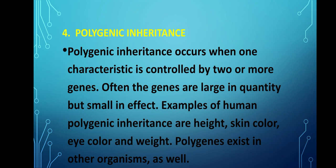Four is polygenic inheritance. Polygenic inheritance occurs when one characteristic is controlled by two or more genes. Often the genes are large in quantity but small in effect. Examples of human polygenic inheritance include height, skin color, eye color, and weight. Polygenes exist in other organisms as well.